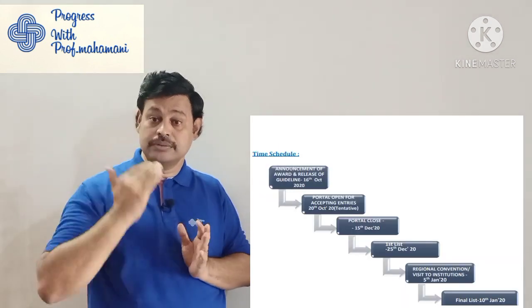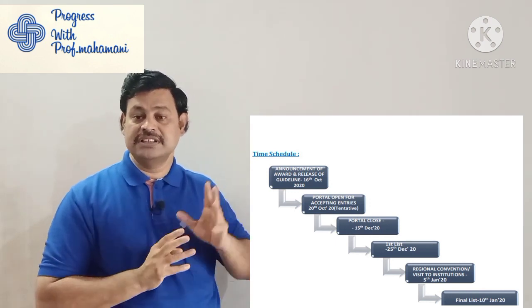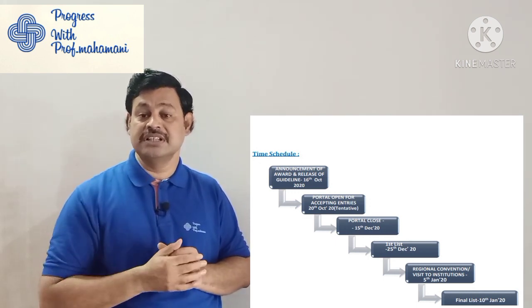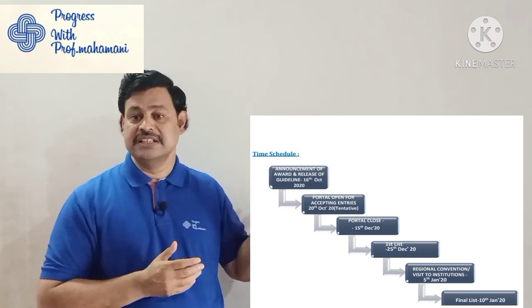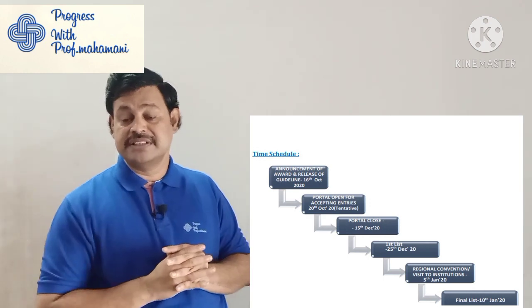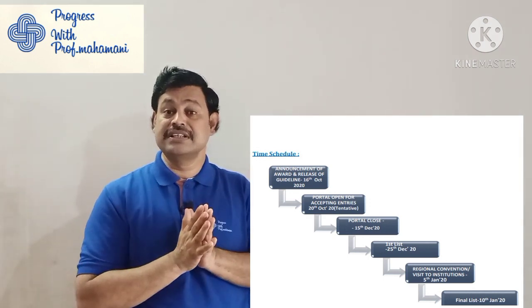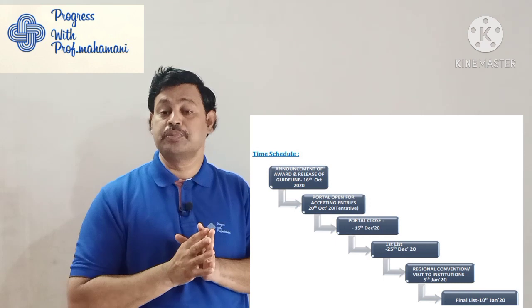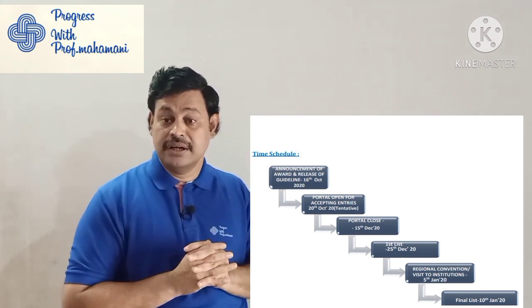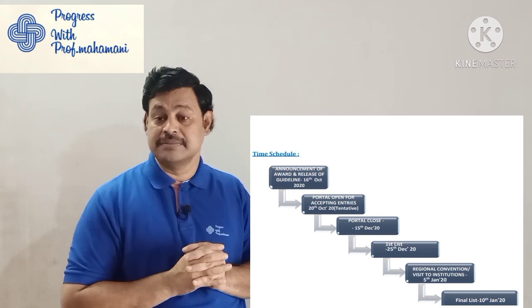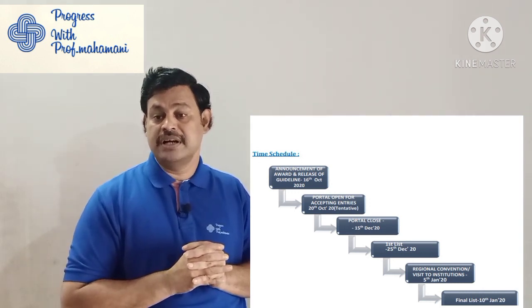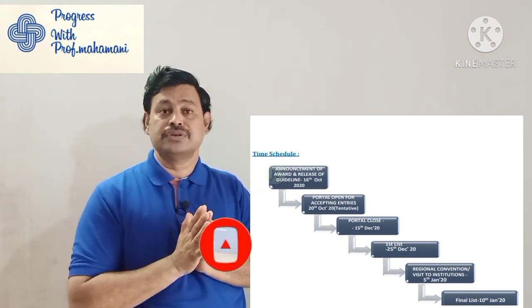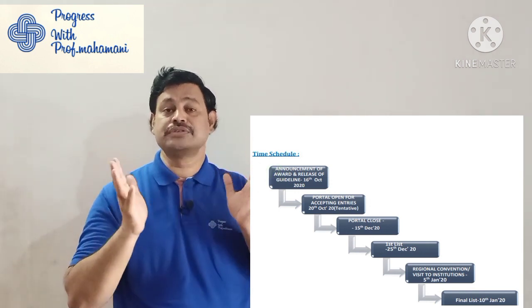The time schedule: the information was launched by AICTE on 16th October. The online portal for nominations opened on 20th October — it has already started. The submission deadline is 15th December. The first shortlist will be announced on 25th December, and the regional convention will be held on 5th January, followed by the final list announcement.